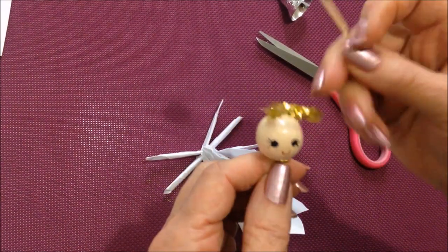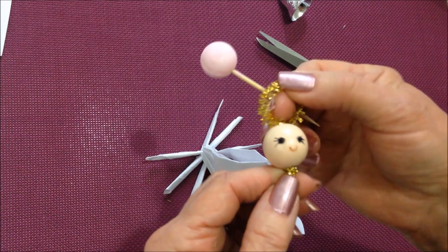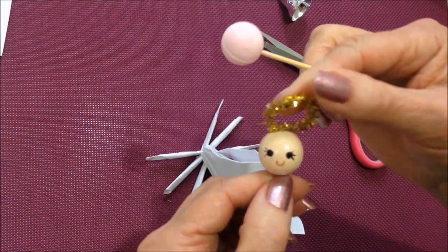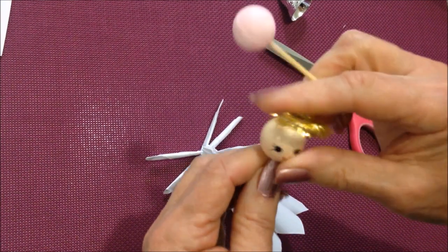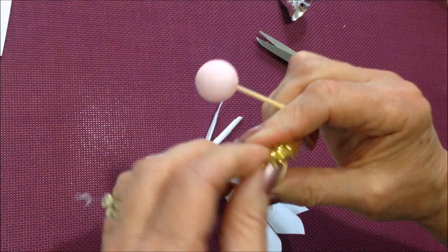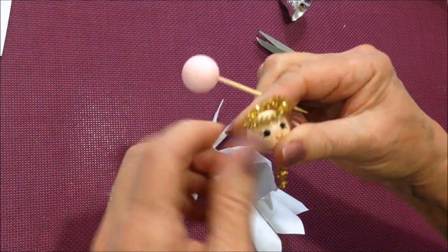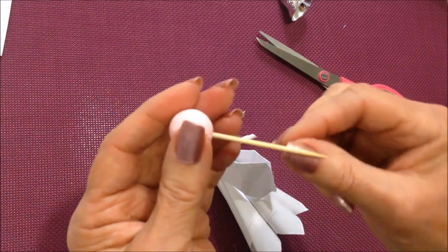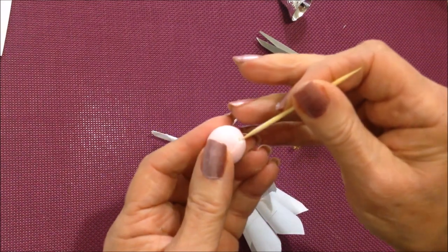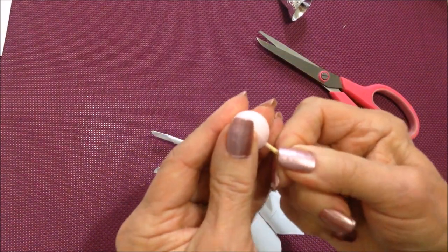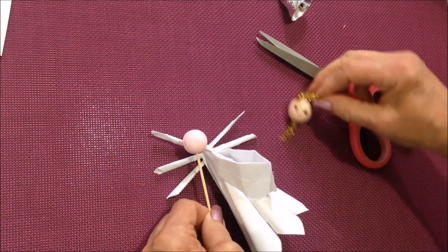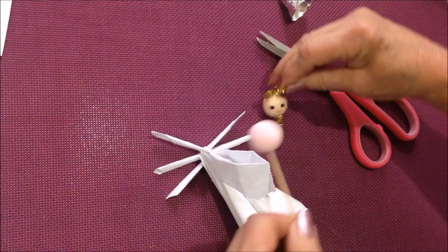For the head, you can either use a little ball like this, shape a pipe cleaner into a circle and tuck the ends down inside the top of the head. This was a ball with a hole in the top. Or this is a little styrofoam head and I painted it pink. And I just stuck a toothpick inside like that. So you could either use this type of a head or this type of a head.